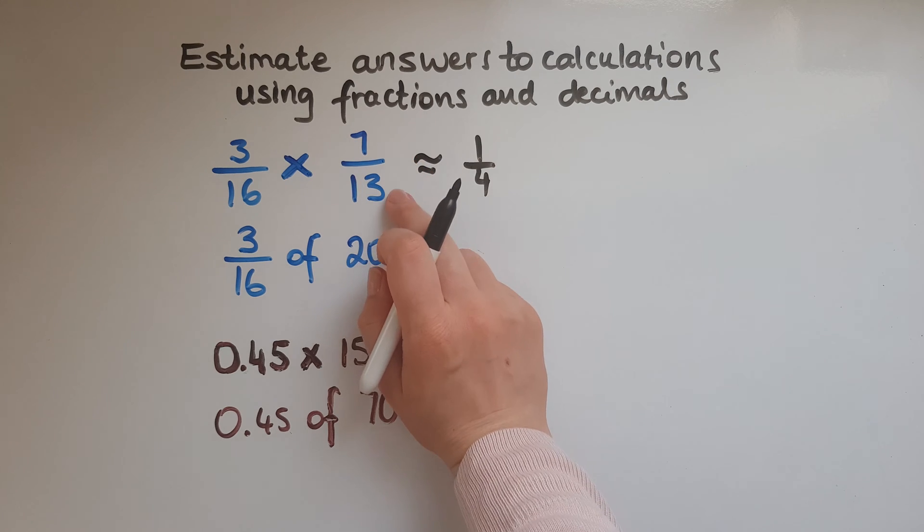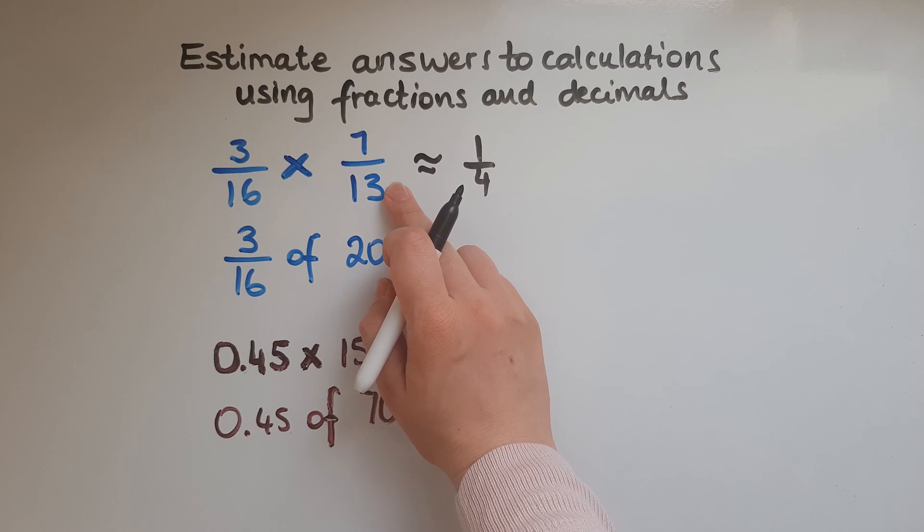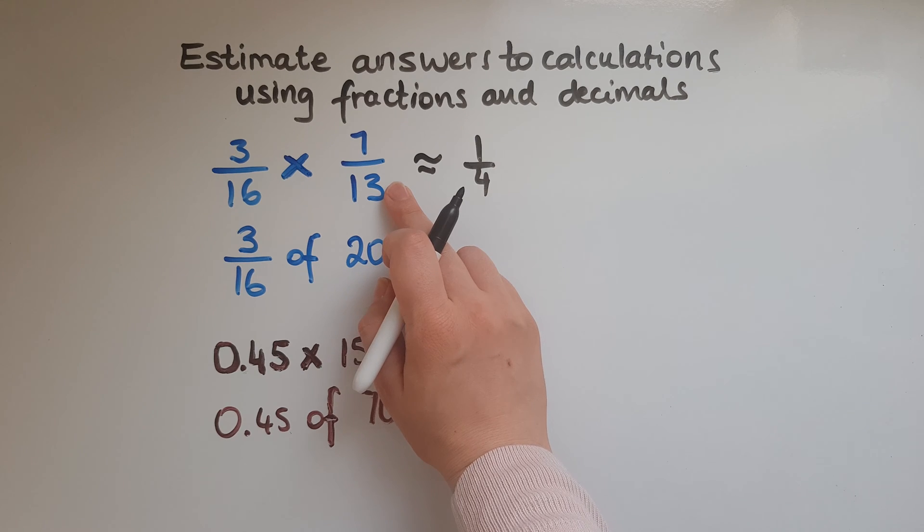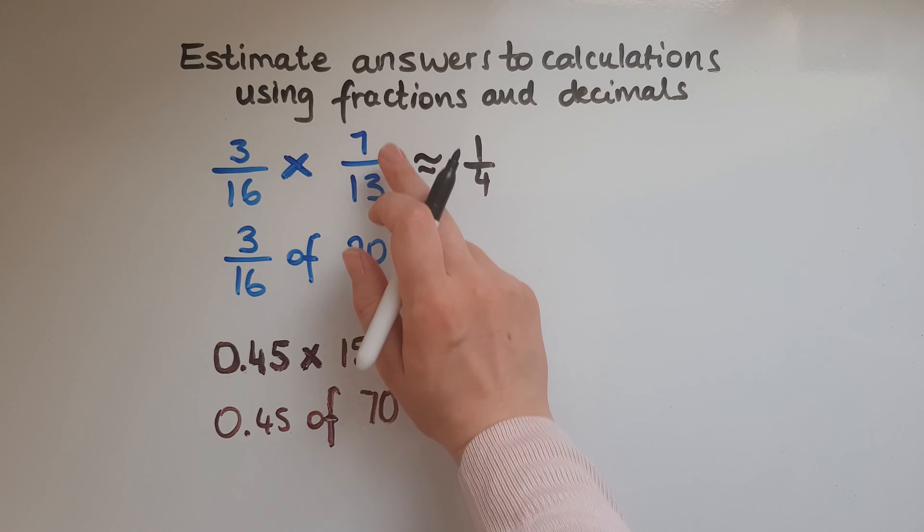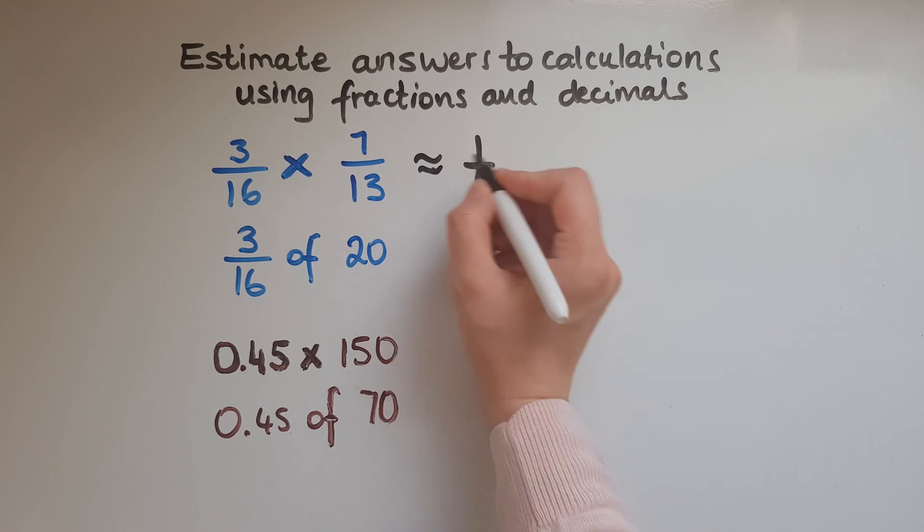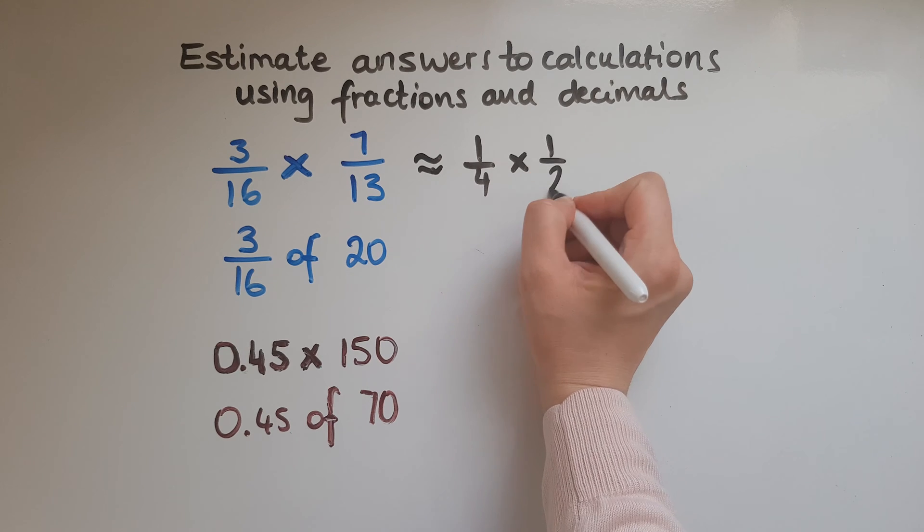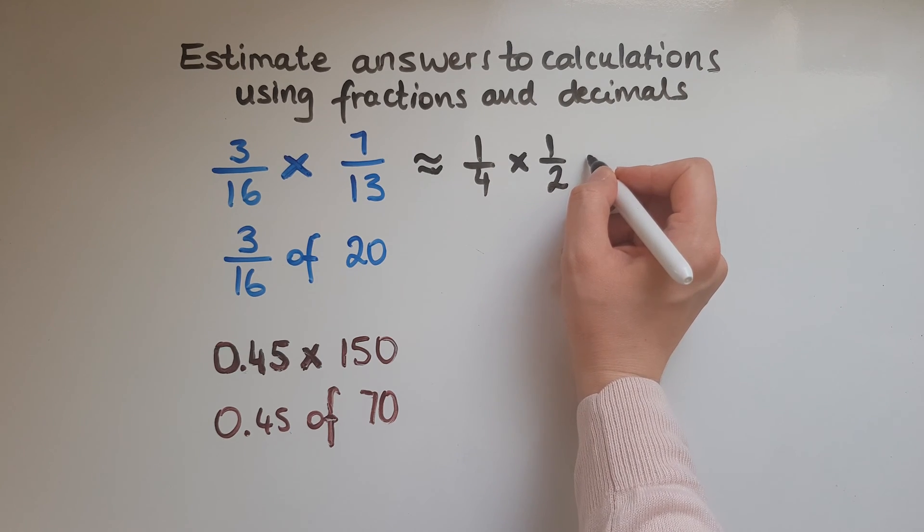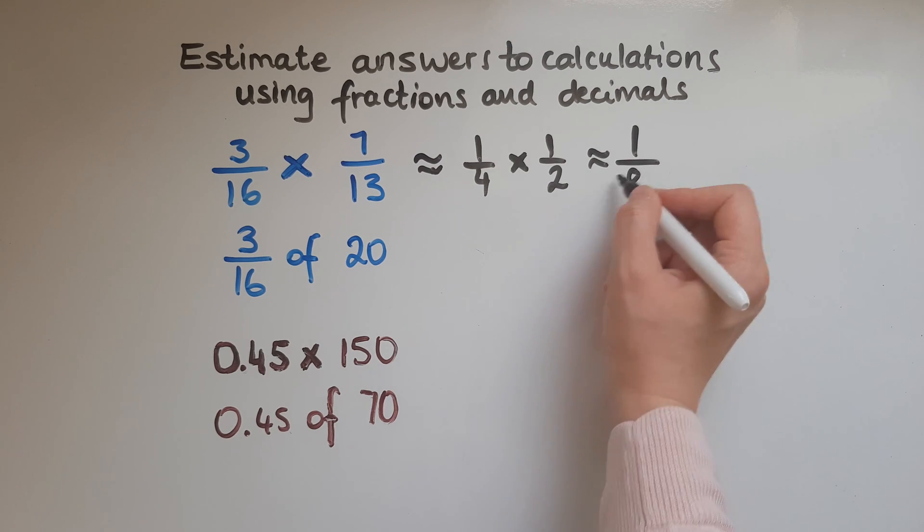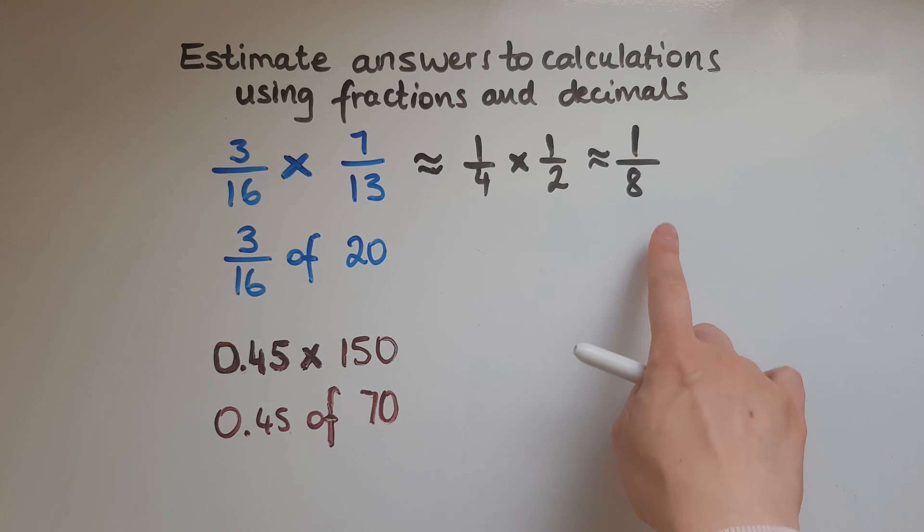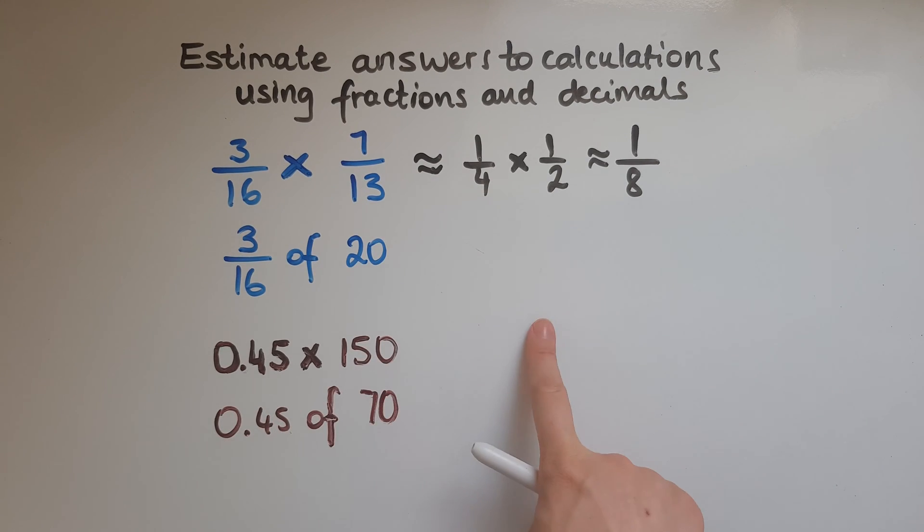And 7 out of 13, double 7 is 14. So it does look like it's close to a half because 7 is half of 14. So that will be times a half. So this is then 1 times 1 is 1 and 4 times 2 is 8. So this is about 1/8, estimating the answer to this question.